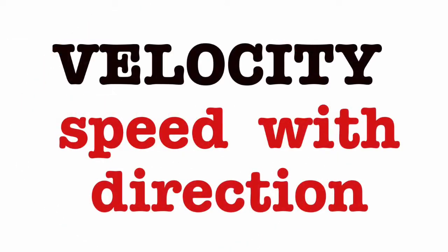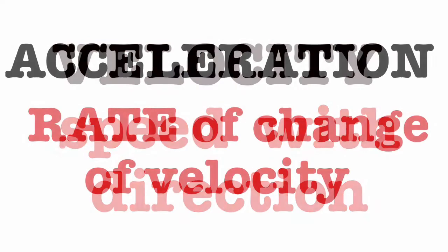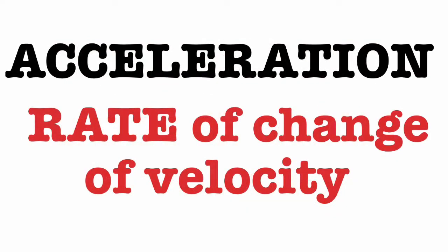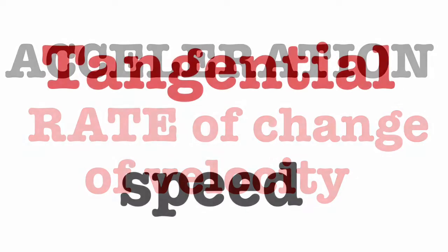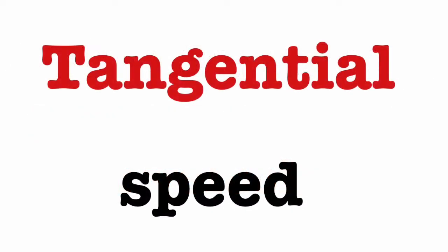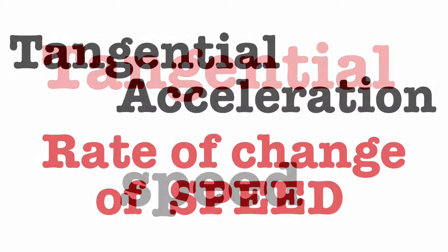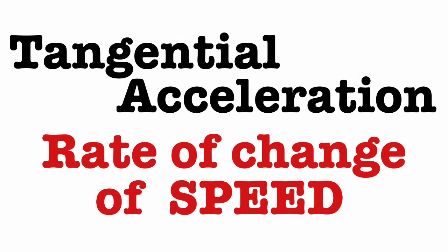Remembering that velocity is speed on the speedometer with the direction from the compass, and acceleration is the rate of change of that velocity. Keep in mind that the term 'tangential' is all about speed and not direction — the tangential acceleration is all about the rate of change of speed: slowing down or speeding up.